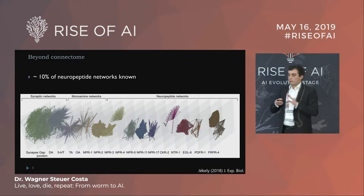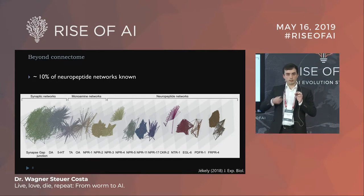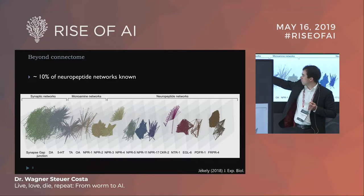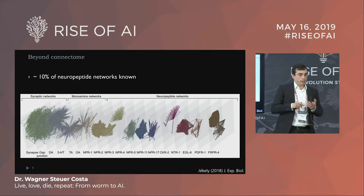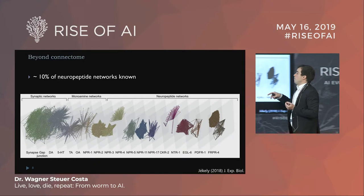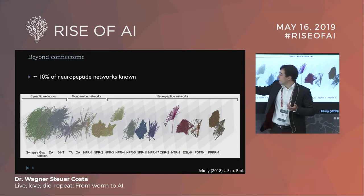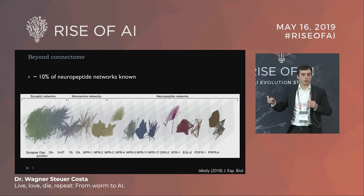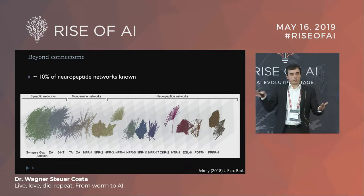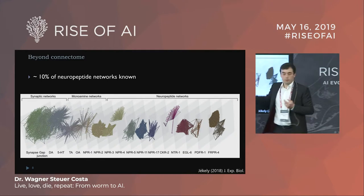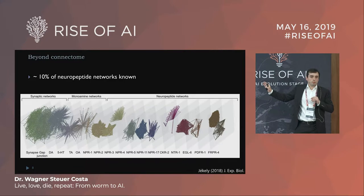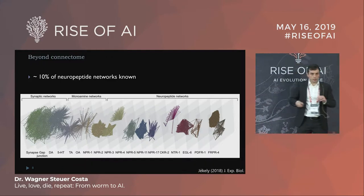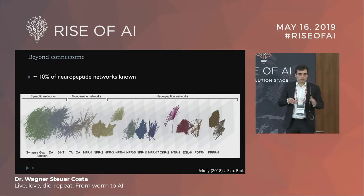Looking at the connectome of C. elegans — all connections the animal has — the green ones are chemical synaptic connections, the dark gray are electrical gap junctions, and there are separate connections for dopamine and serotonin that modulate everything. The dense core vesicles carrying neuropeptides generate a completely different network pathway. We have disentangled about 10% of the neuropeptidergic connectome in C. elegans, involving over 100 different neuropeptides and over 1,000 different receptors, all intermingled.